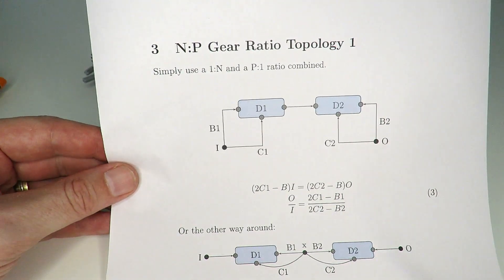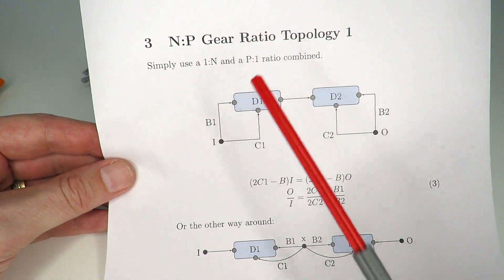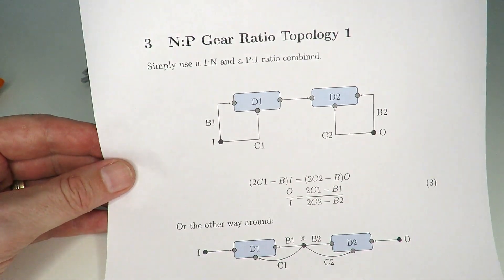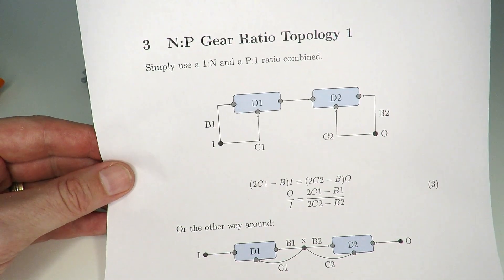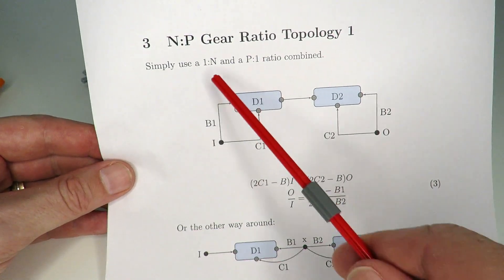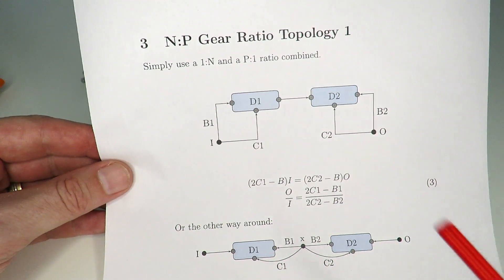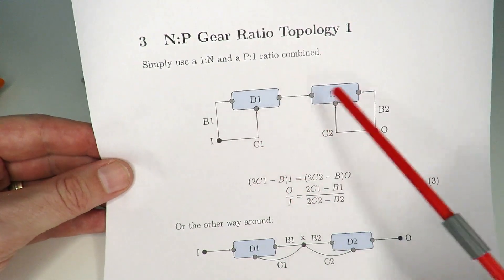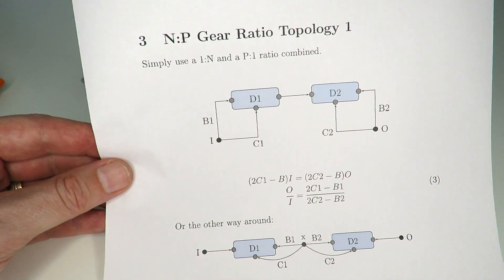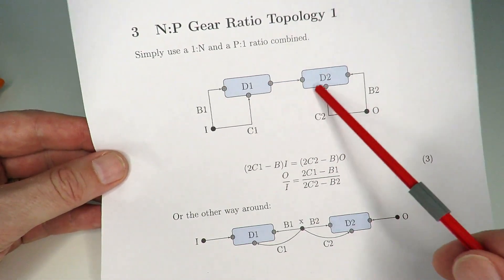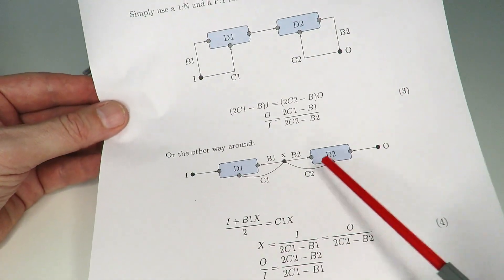What we're trying to achieve today is to design an n-to-p gear ratio where n and p are prime. You might think that sounds easy — we already know how to design a 1-to-n and a p-to-1 using the previous technique, and we can just put those in series to create an n-to-p in one of these configurations.